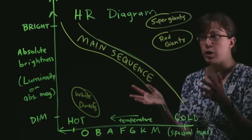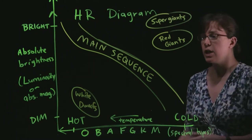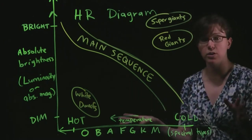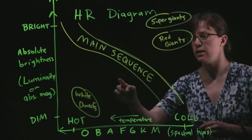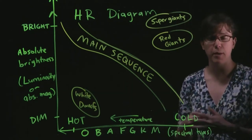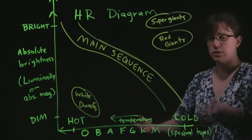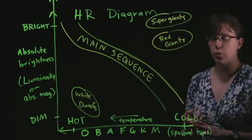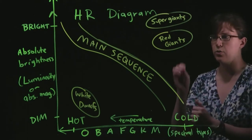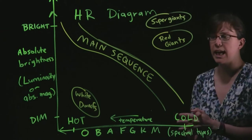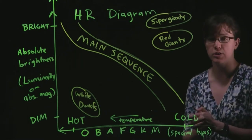Even if this were the only thing we could use the Hertzsprung-Russell diagram for, we can still identify a couple of really key ideas — for example, the fact that there's a whole swath of space where no stars sit. Stars cannot be stable at certain combinations of temperature and luminosity. But it doesn't stop there. There are two other big ways we can use this diagram: the way stars move through it as they evolve, and additional trends in stellar characteristics we can read off of it.